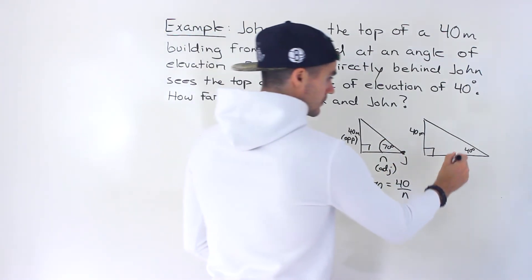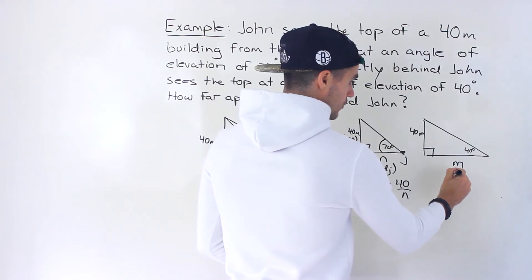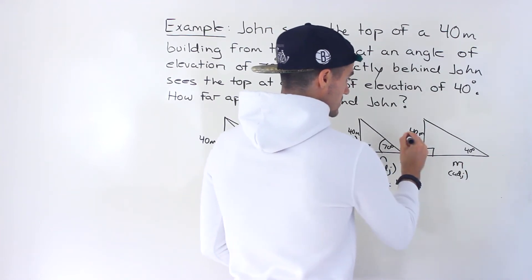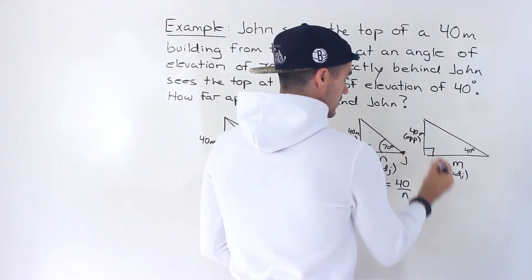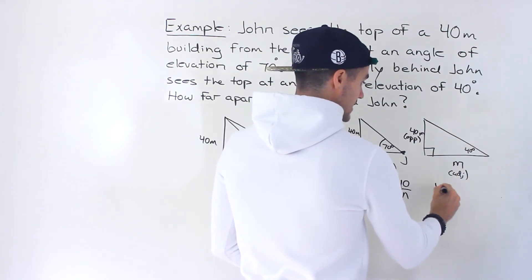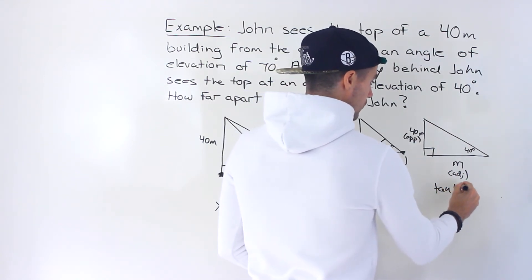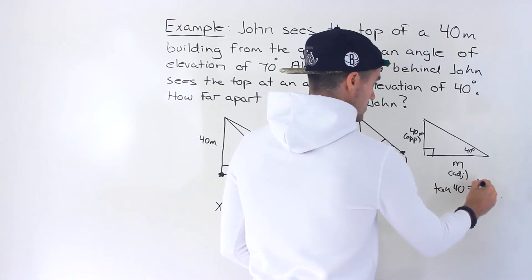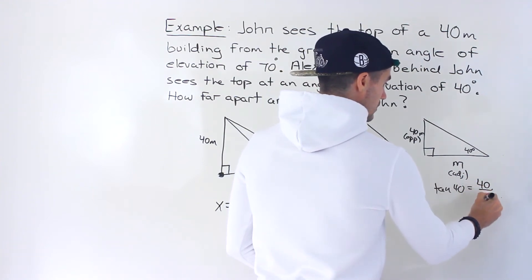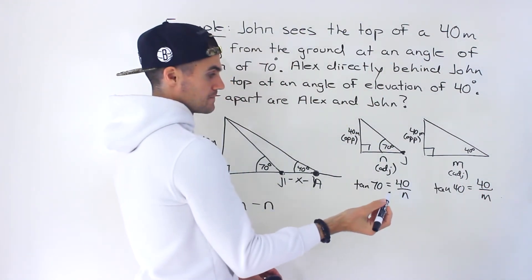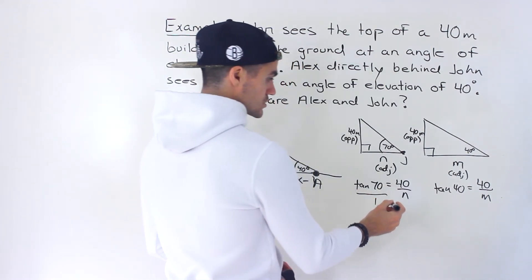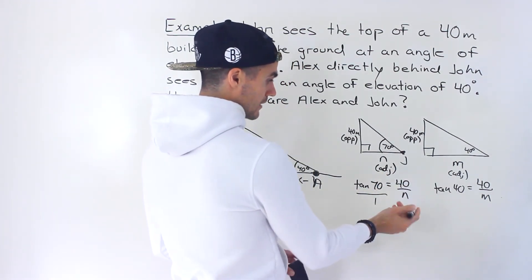And then same thing here. This M here that we'd be solving for is the adjacent side. This is the opposite side. And so we would use tan again, but it would be tan of 40 is equal to the opposite over the adjacent, like that.